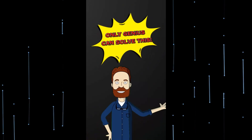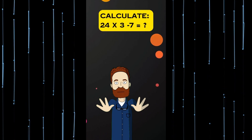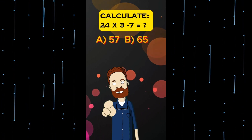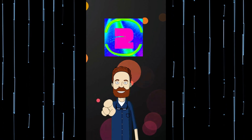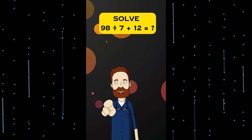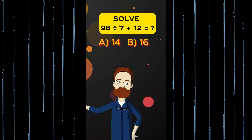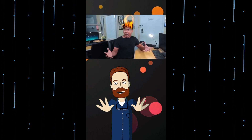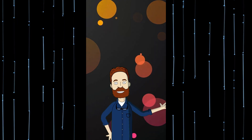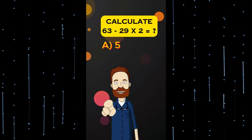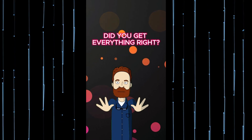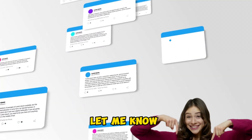Only genius can solve this without using a calculator. Number 1: Calculate 24 times 3 minus 7. Is it A, 57, B, 65, or C, 71? Great job! Let's keep the momentum going with question 2. Number 2: Solve 98 divided by 7 plus 12. Is it A, 14, B, 16, or C, 18? You're on fire! Let's keep the excitement alive with the next challenge. Number 3: Calculate 63 minus 29 times 2. Is it A, 5, B, 7, or C, 9? Did you get everything right? Comment all your answers below. Wow, I think it's insane, right? What do you think? Let me know in the comments below.